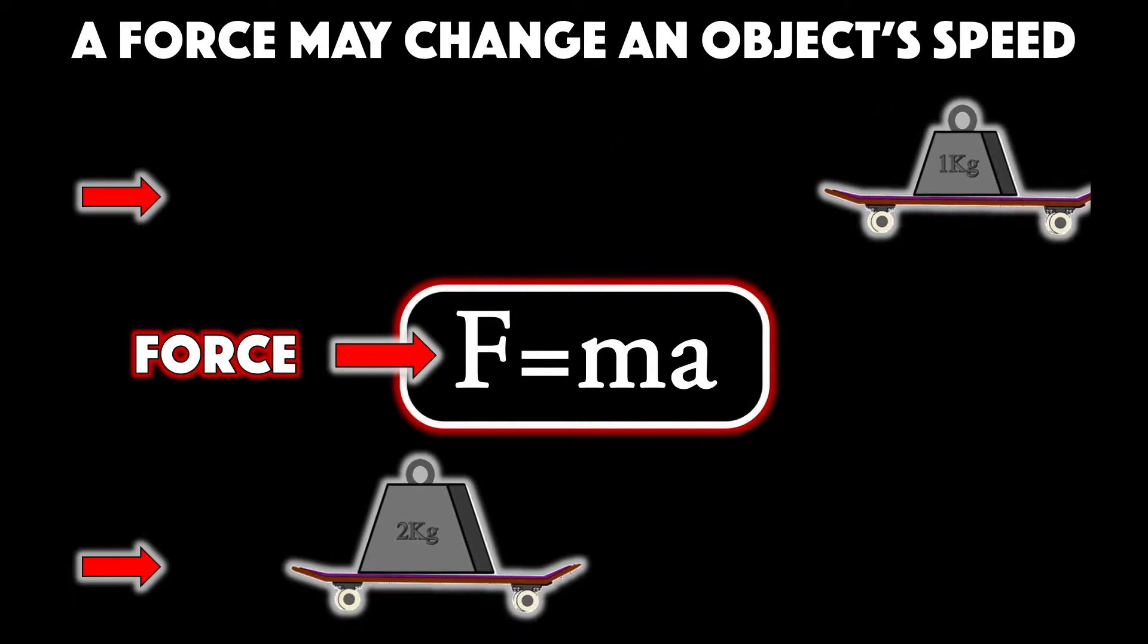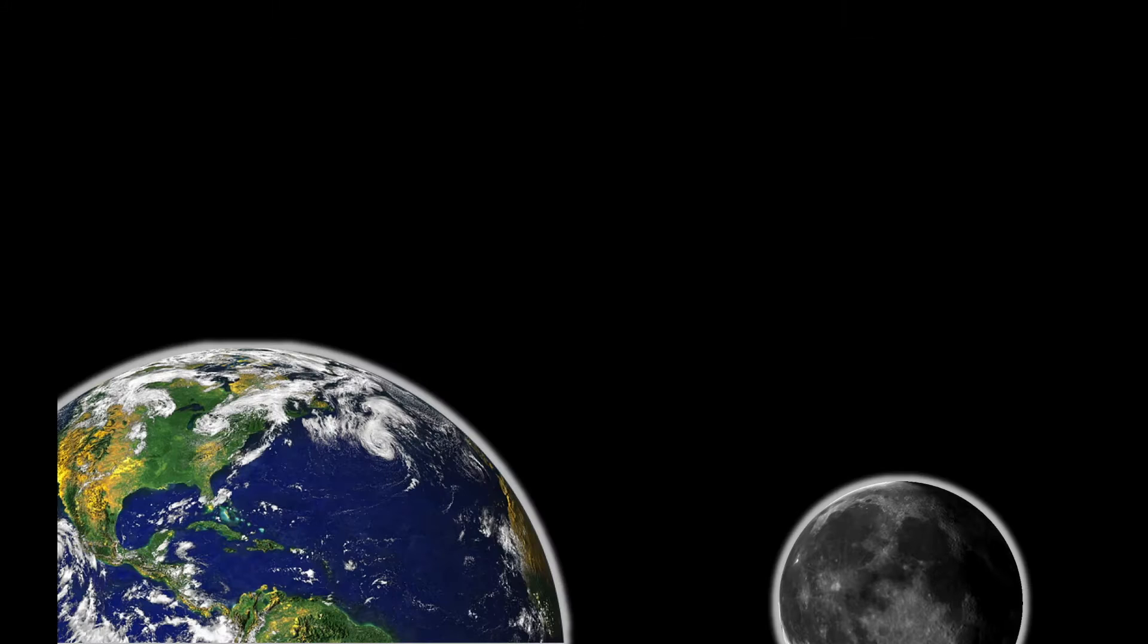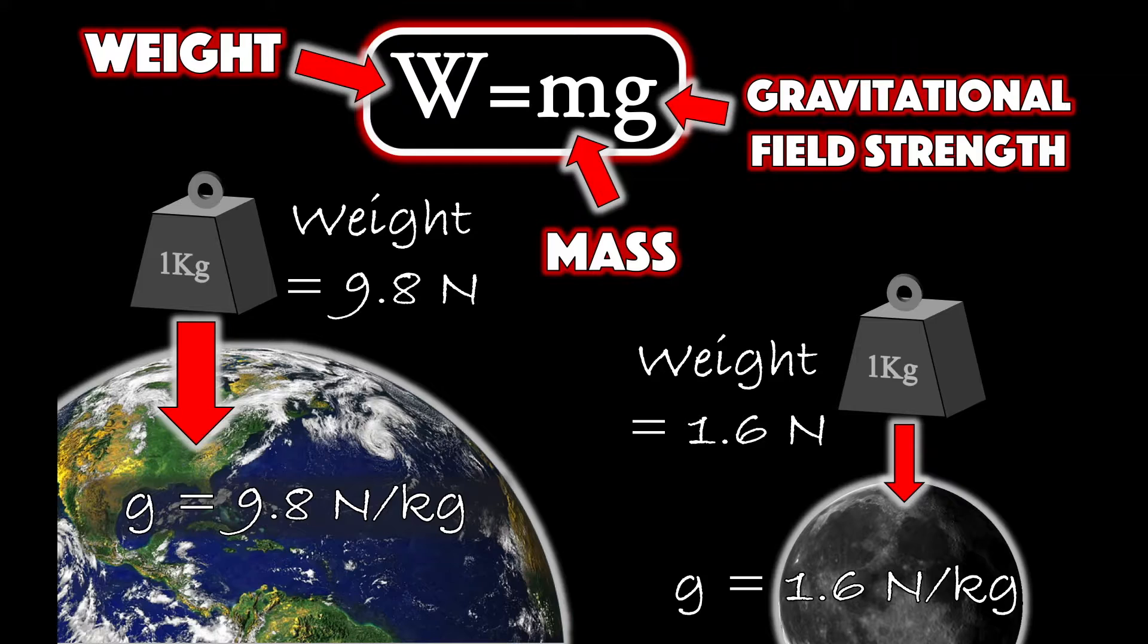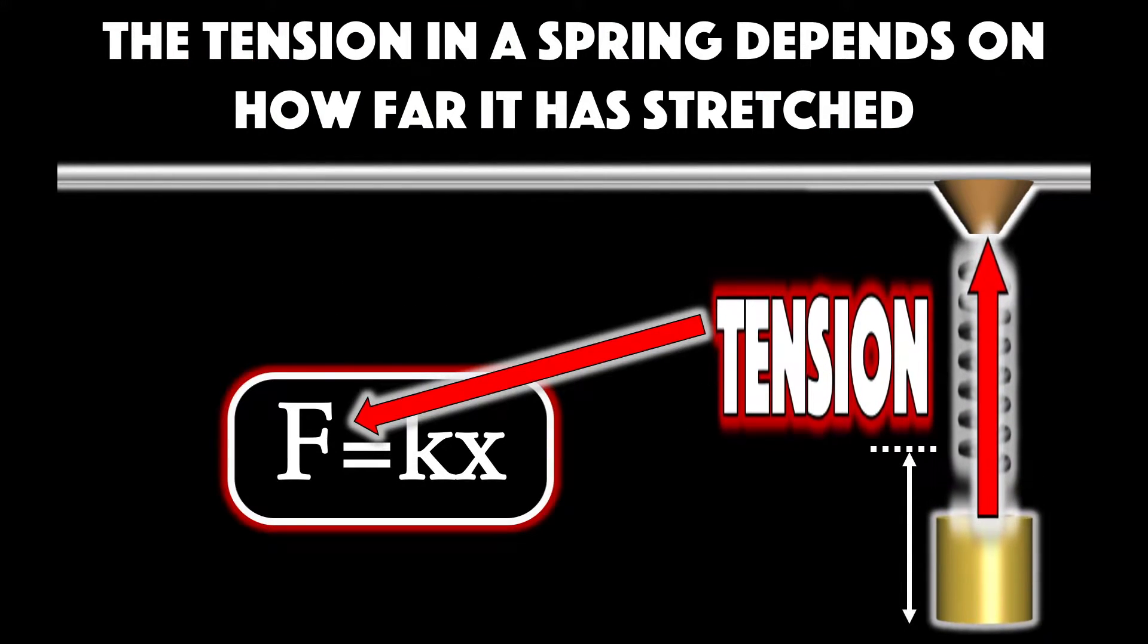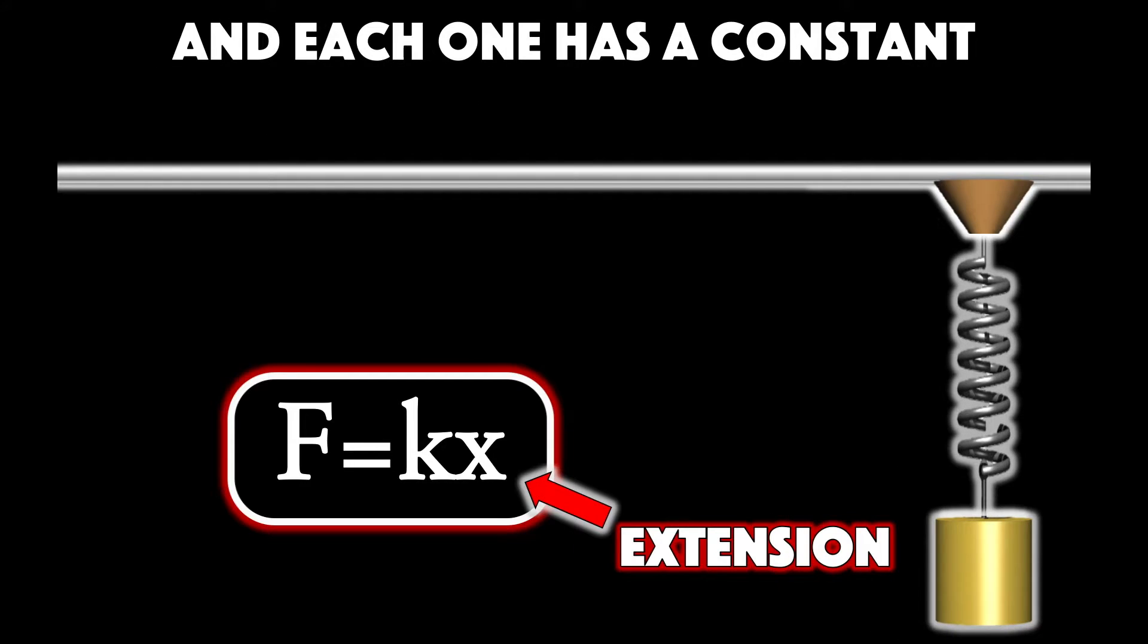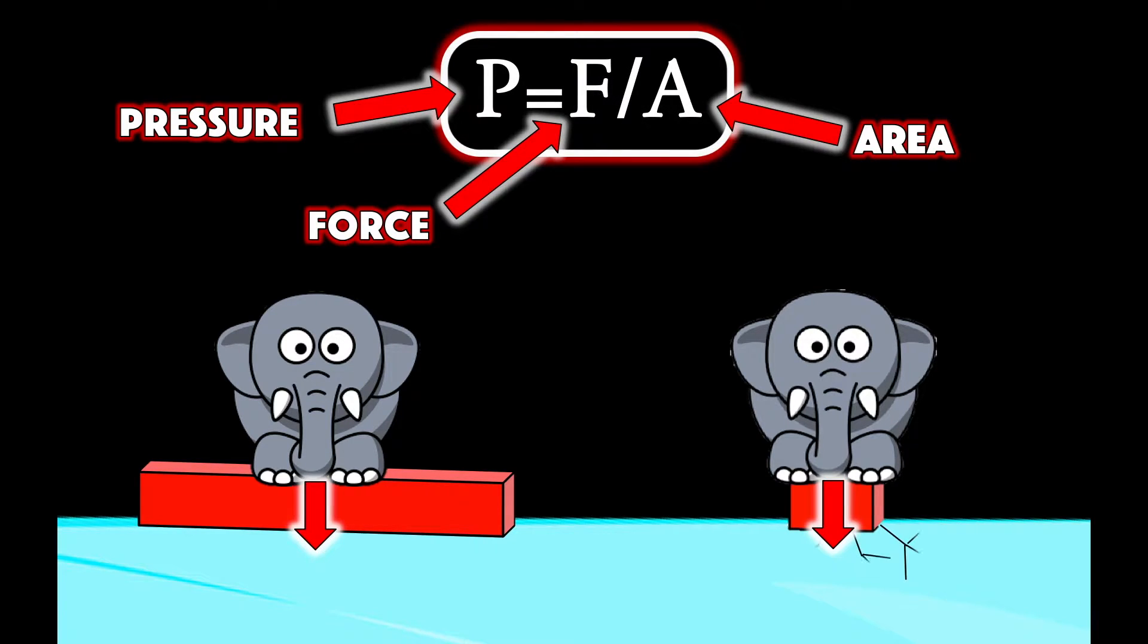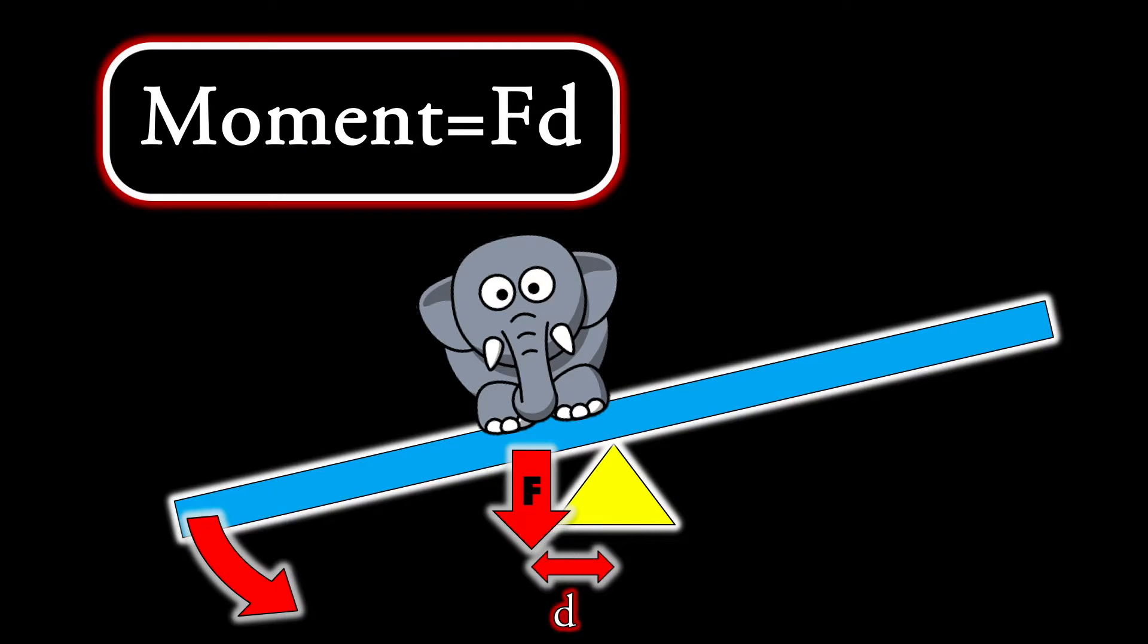The force may change an object's speed, F equals m times a. It could be weight, F equals m times g in newtons by the way. The tension in a spring depends on how far it is stretched. And each one has a constant k, so F equals k times x. Pressure's force divided by the area. Now learn that a moment's F times d, which is the distance to the center of the turn.